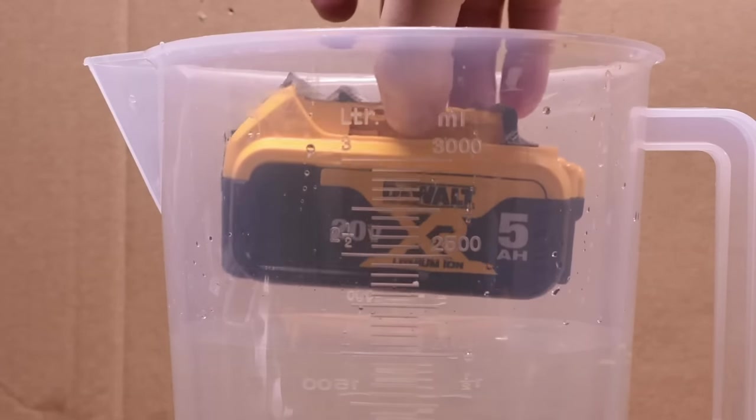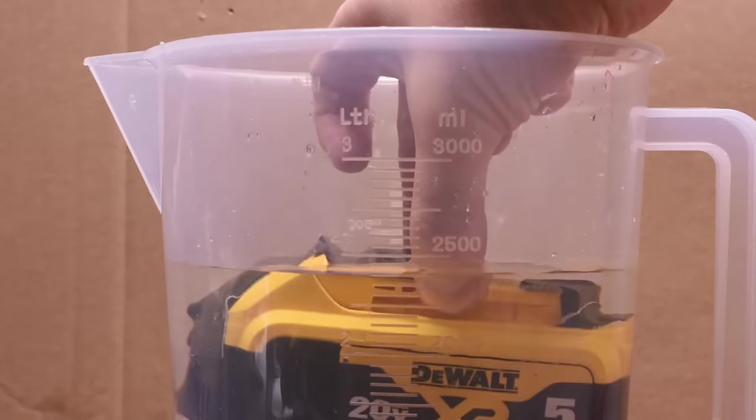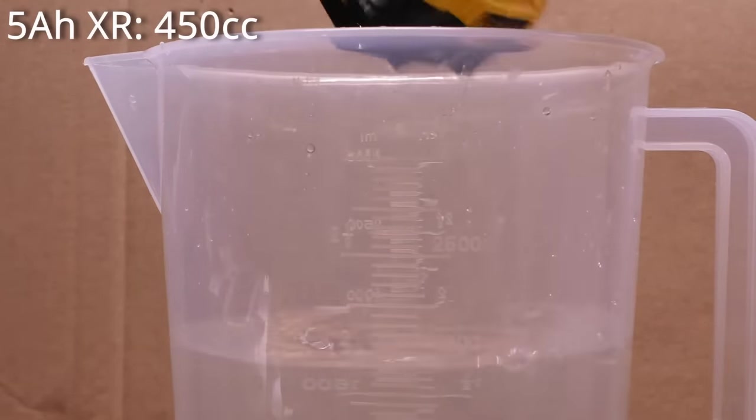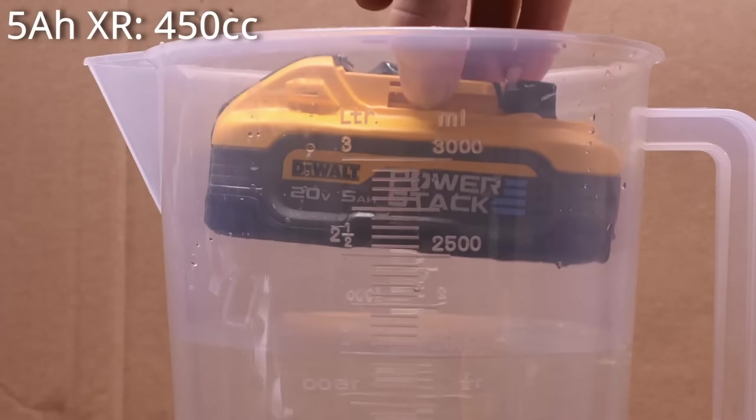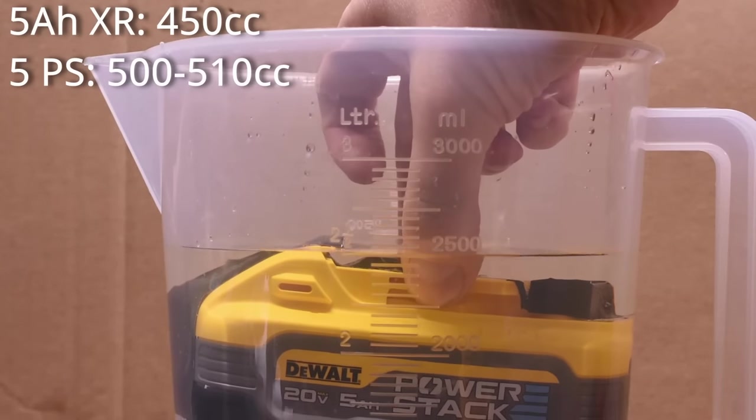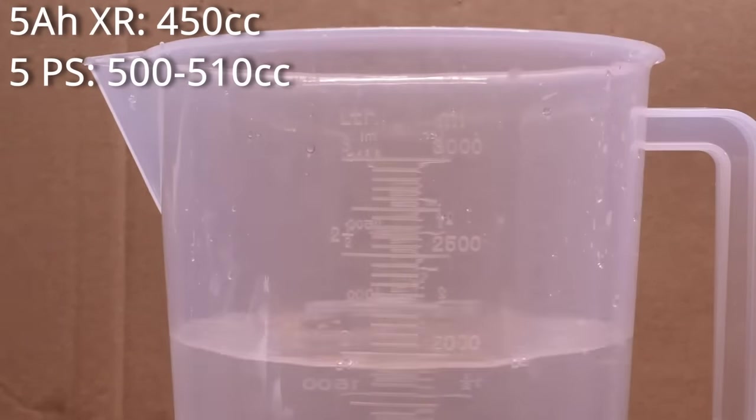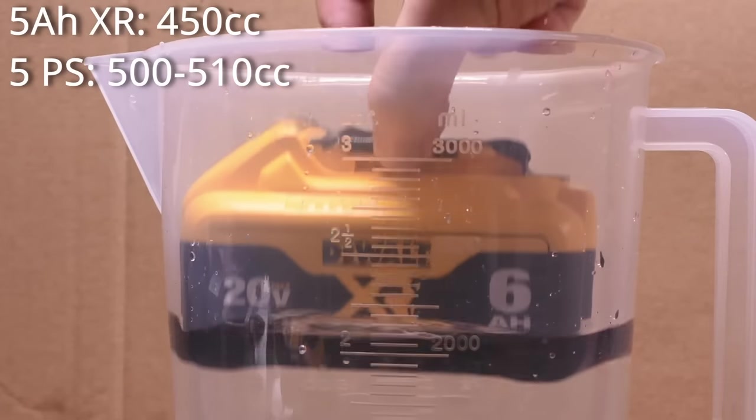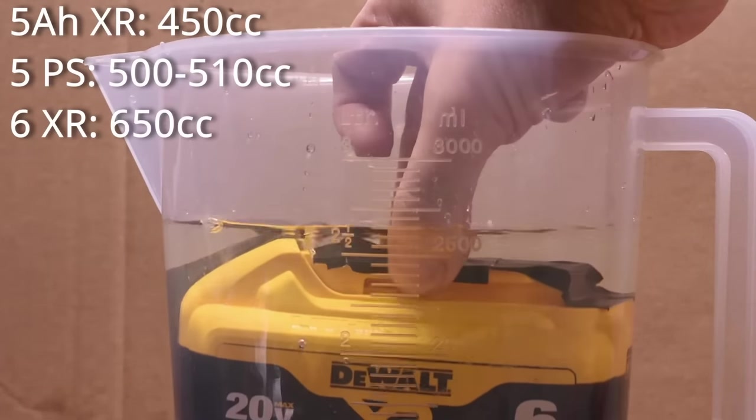The 5 amp hour XR displaces 450 milliliters, so 450 cc's. The 5 amp hour Power Stack is just over 500, 510 maybe cc's, so larger. The next step up in power in the line would be two rows of 21700 cells, the 6 amp hour battery in the XR line, which comes in at a bigger 650 cc's obviously.